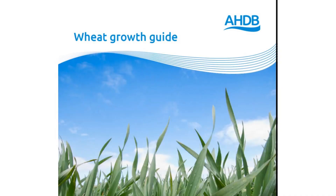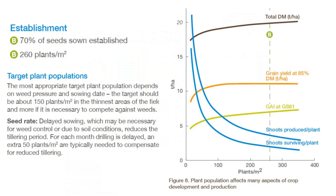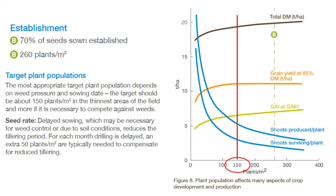The AHDB wheat growth guide suggests a benchmark of 260 plants per metre squared, assuming 70% of sown seeds established. However, on my heavy clay soils we suffer from a much lower establishment percentage, and yield is the limiting factor — significantly less than the 10 tonnes per hectare suggested in their graph. Therefore, looking at this graph, I prefer to focus on the point where the grain yield levels off, as water availability and shooting is not a limiting factor on my farm. So we have an objective of 150 plants per metre squared.